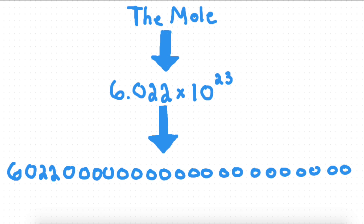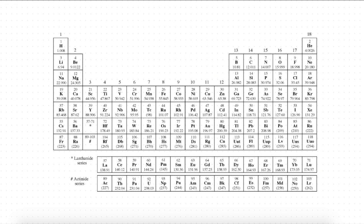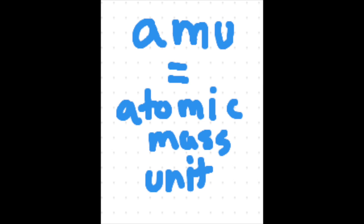But what exactly does a mole mean? In order to understand the mole, we have to go to our trusty periodic table. But before we do any calculations, we have to understand this one unit: the AMU, or atomic mass unit. The atomic mass unit is just a way of measuring the mass of super small, tiny atoms.